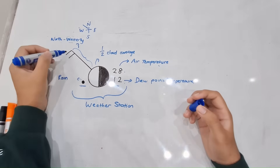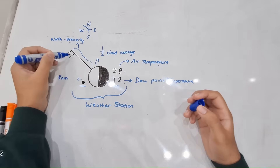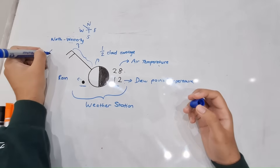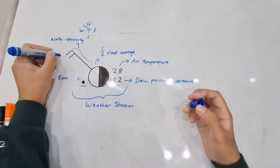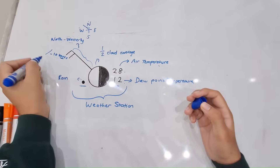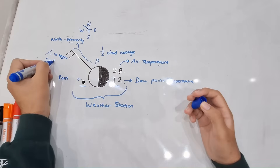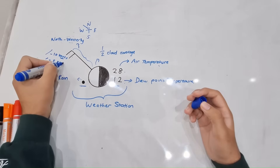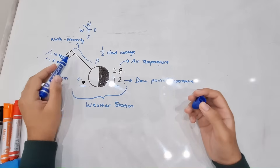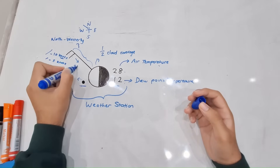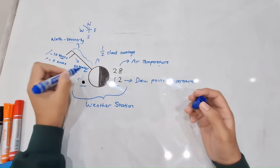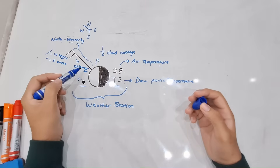Lastly, we look at these two lines. These are two long lines. A long line represents 10 knots — remember the unit of measurement for wind speed is knots — and a shorter line represents 5 knots. In this example there are just two long lines, so the wind speed will be 20 knots.